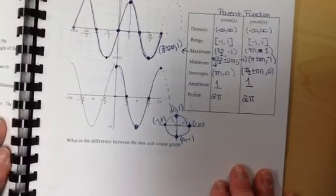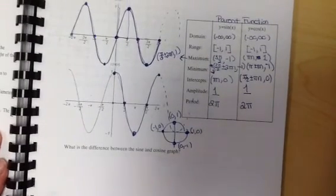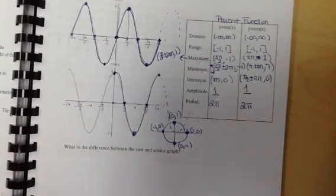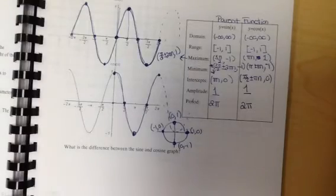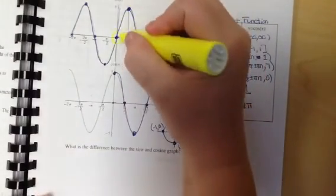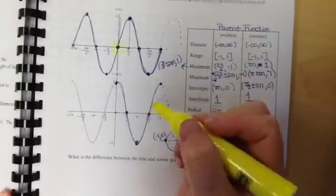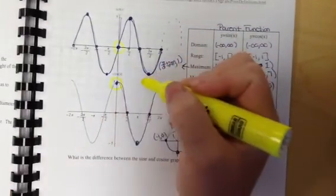The last question down here says, what's the difference between sine and cosine? If you look at these graphs, they look very similar. The only difference is that right here at (0,0), sine's at zero, but cosine's already up at one.